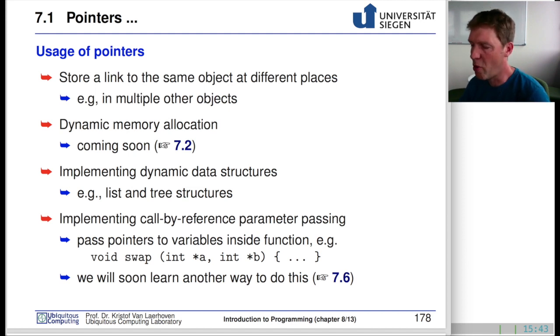Pointers can be used for multiple things. One is if you want to store a link to the same object at different places. For instance, a movie tends to be holding a lot of memory blocks in our computer. We don't want to copy this the whole time, but we might want to point to this movie or have a reference to this movie in different locations.